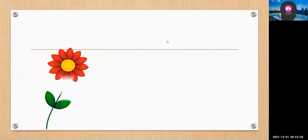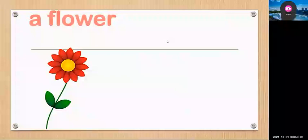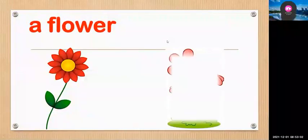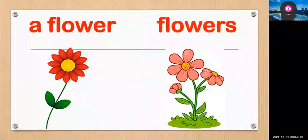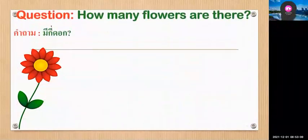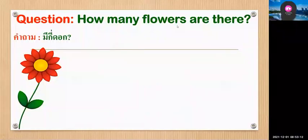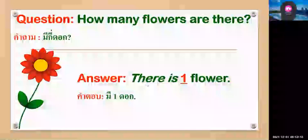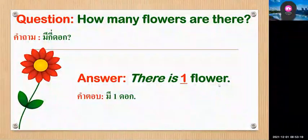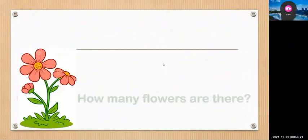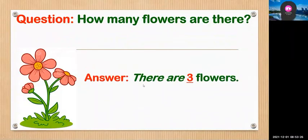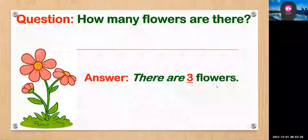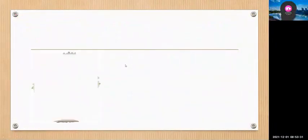Number one: a flower. Flowers. Question: how many flowers are there? Answer: there is one flower. How many flowers are there? There are three flowers.